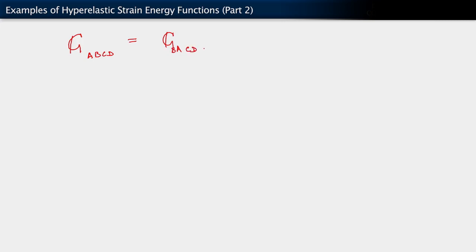So it is symmetric with respect to the first two indices. It also is symmetric with respect to the third and fourth index. These are what we call minor symmetries.